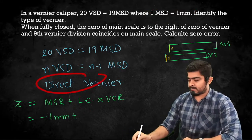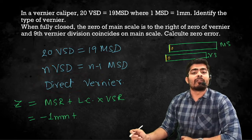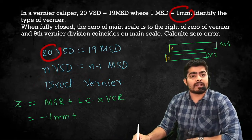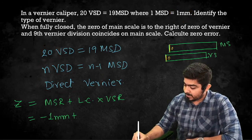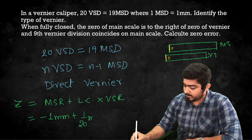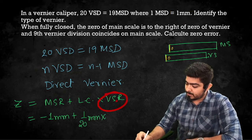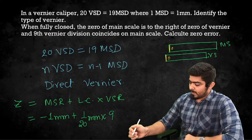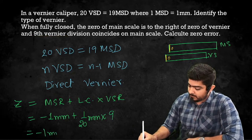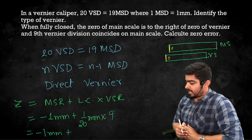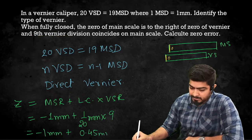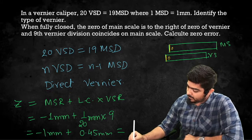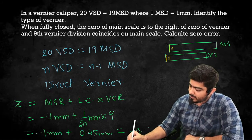The least count is 1/N × MSD. MSD is 1 mm and N is 20, so Least Count = 1/20 mm. The Vernier Scale Reading is 9, since the 9th Vernier Division coincides. So: −1 mm + (1/20 × 9) = −1 + 0.45 = −0.55 mm. The zero error is −0.55 mm.